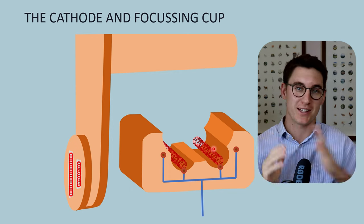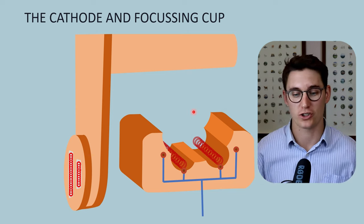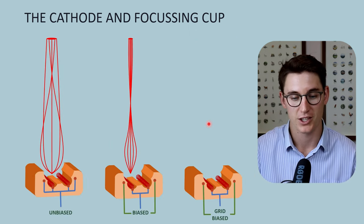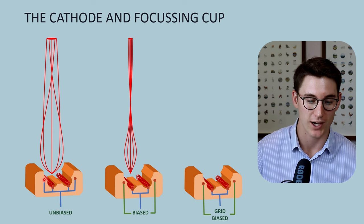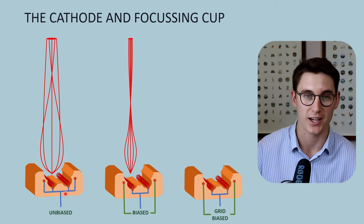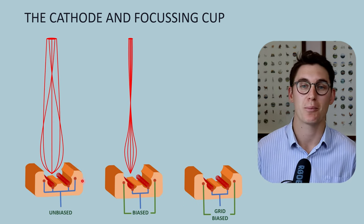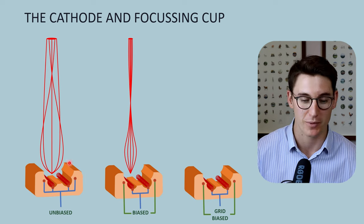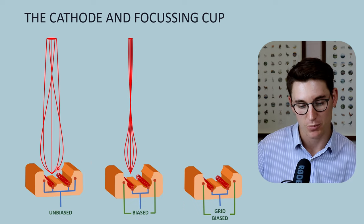It's the tube potential — that tube voltage — that accelerates those electrons. Without focusing, those electrons would spread out and hit the anode over a large surface area. This is where we use our focusing cup to focus those electrons down onto a smaller area on our anode. With an unbiased focusing cup, the electrical supply to our filament and to our focusing cup is shared. As we increase the current through our filament, we increase the current through our focusing cup, making it negatively charged. That negative electromagnetic field repels those negative electrons, focusing them down onto a smaller area.